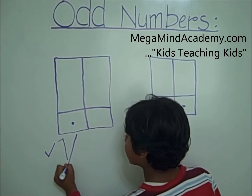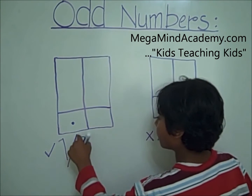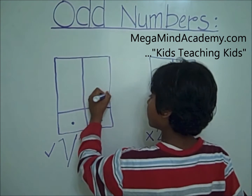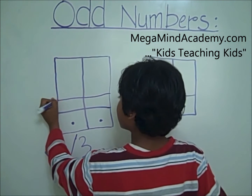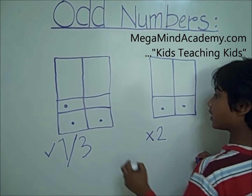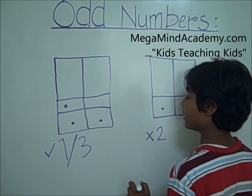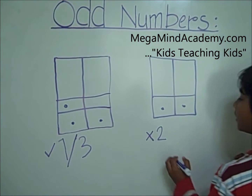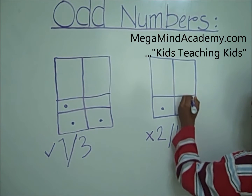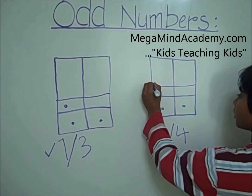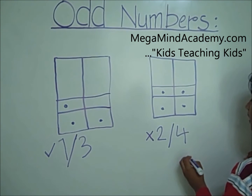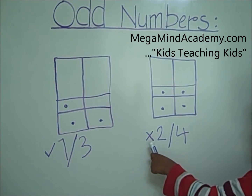Now let's go to three. We draw three dots: one, two, and three. Three does not have a pair, so it's an odd number. Let's go to four. We draw four dots: one, two, three, four. Four has a pair, so it's not an odd number.